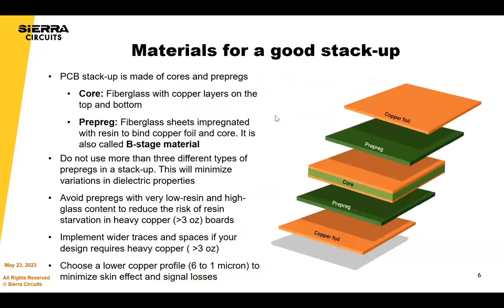PCB stack-ups are made up of cores and prepregs. A core is basically fiberglass with epoxy and copper on either side of that. It is a C-stage material, meaning it will not melt under pressure or temperature rise.